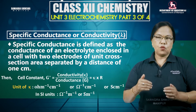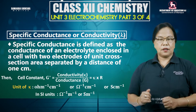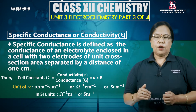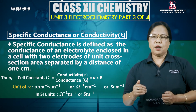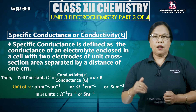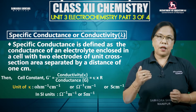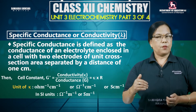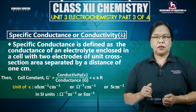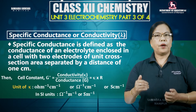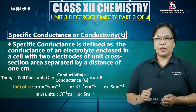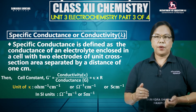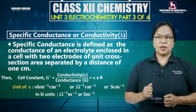In terms of resistance, Kappa equals 1 by R into cell constant, or Kappa into R. The unit of Kappa is ohm inverse centimeter inverse, that means Siemens per centimeter.